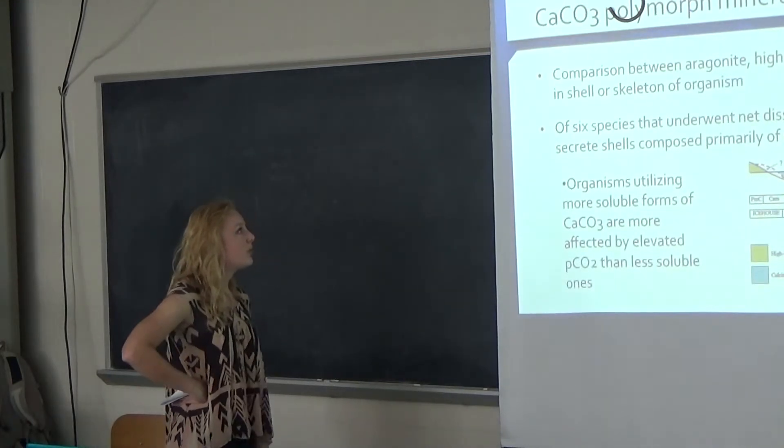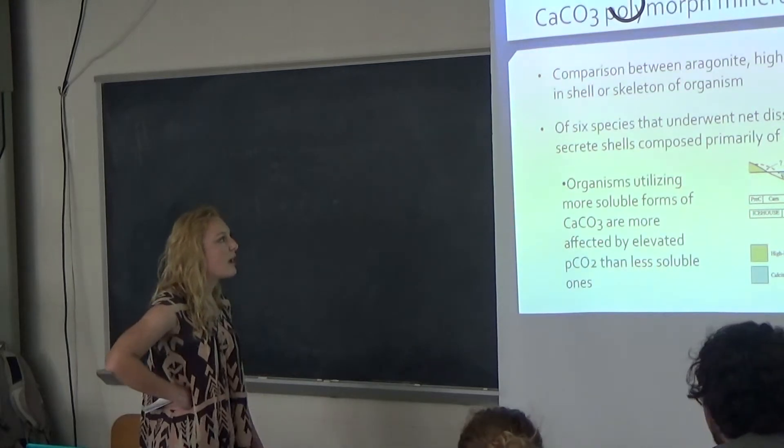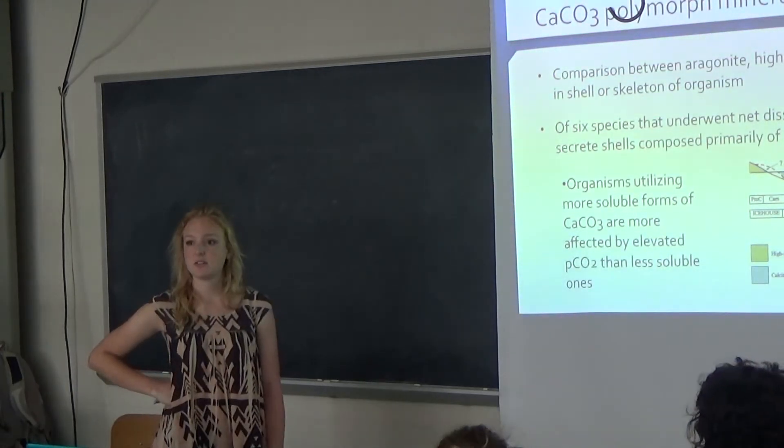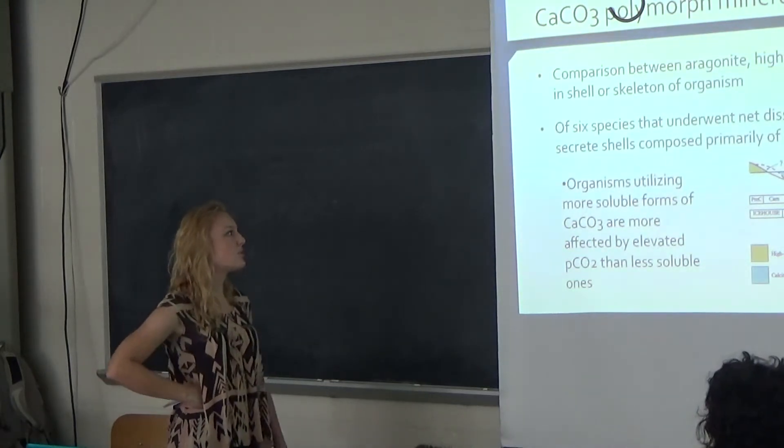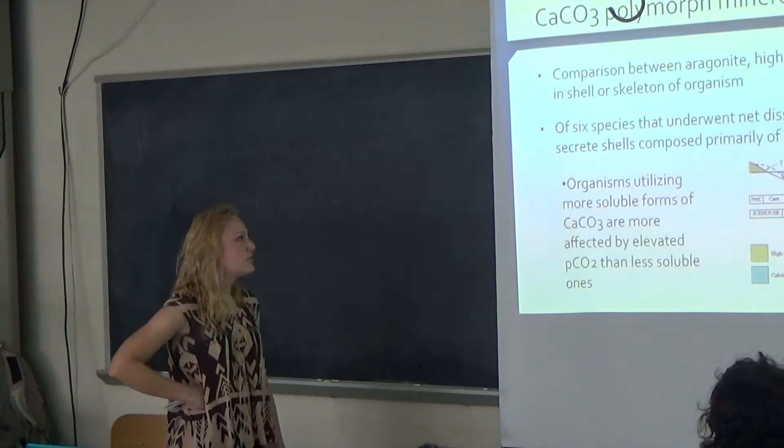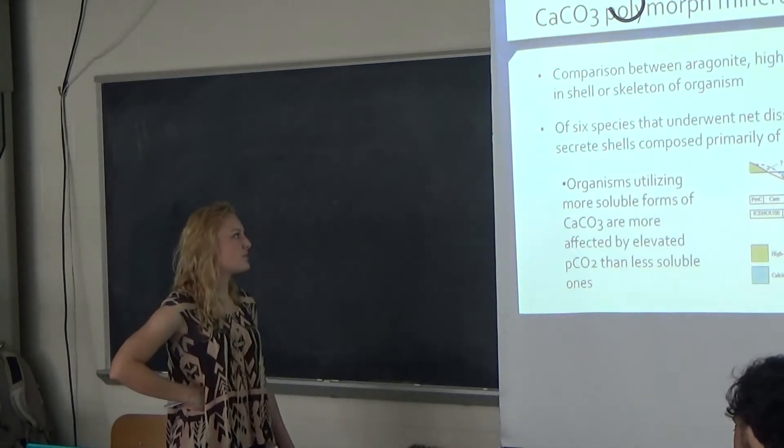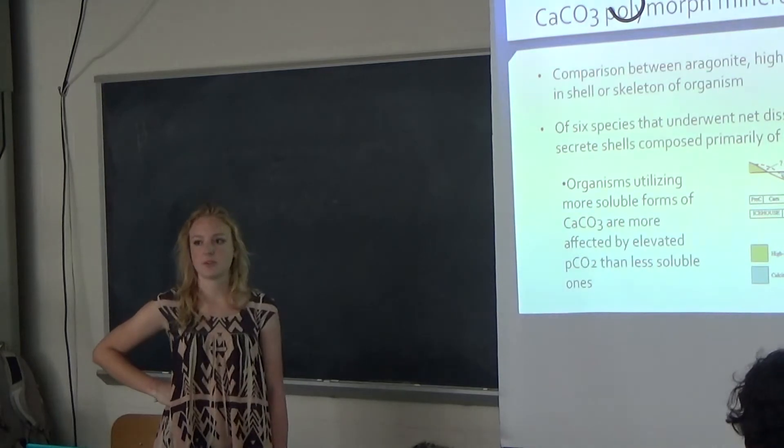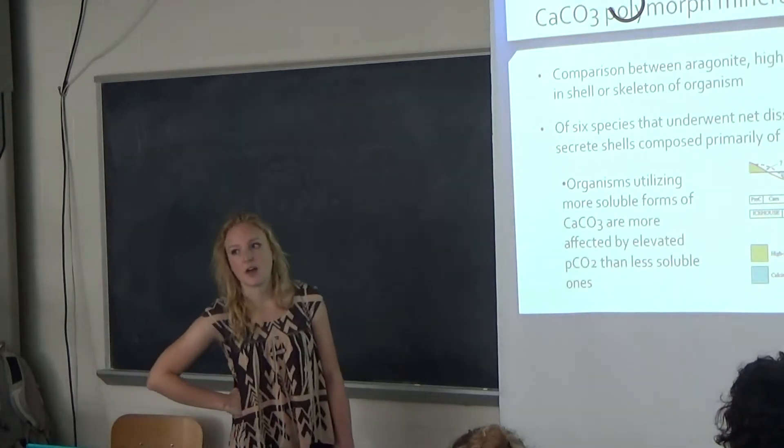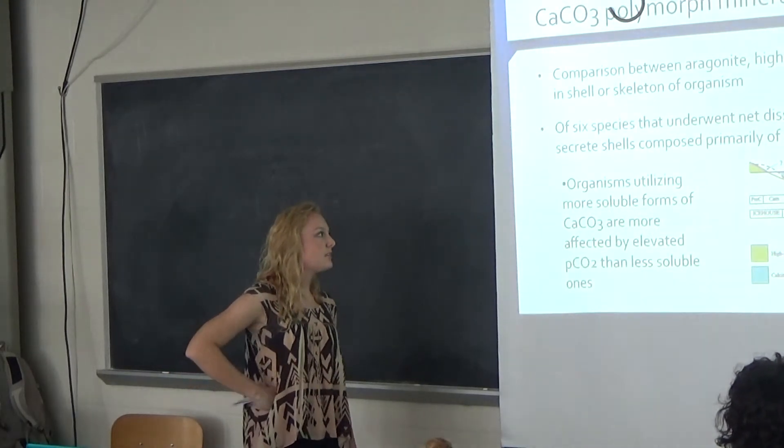For the polymorph mineralogy, we're just comparing the aragonite, high magnesium, and low magnesium calcite from the shell and the skeleton of the organisms. What we noticed in the experiment is that six species underwent the net dissolution, and five of those secreted shells composed primarily of the soluble forms, which was the aragonite and the high magnesium calcite forms.